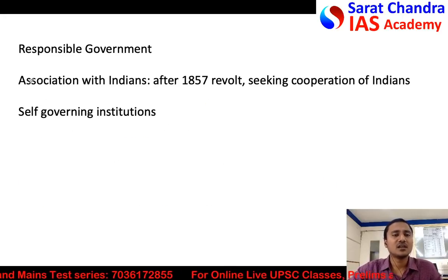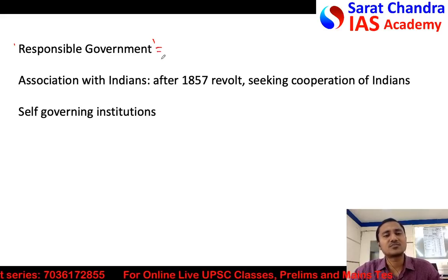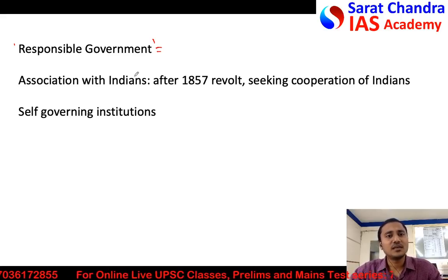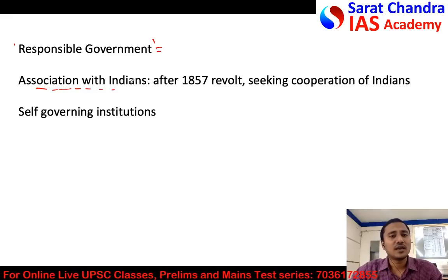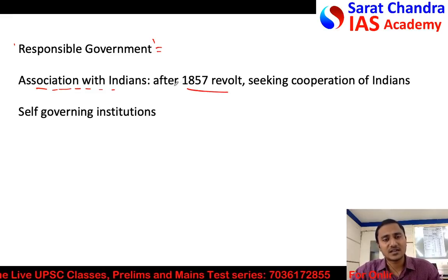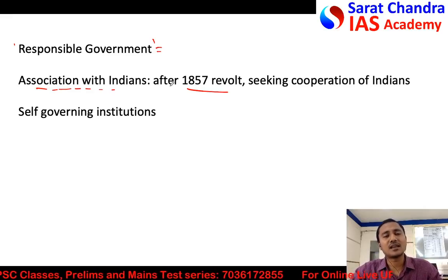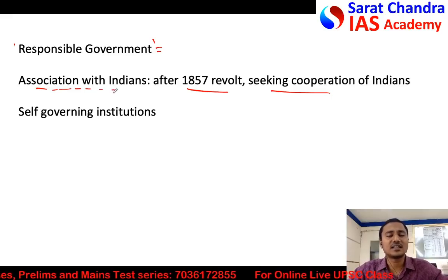Let me start the answer by defining the terms. The statement says British aimed to establish responsible government in India. A responsible government means a government that is responsible to the people — where those making laws are representatives of the people. After the 1857 revolt, the British clearly understood that without associating Indians in administration, Indians would rebel again, so they needed to include Indians in governance.